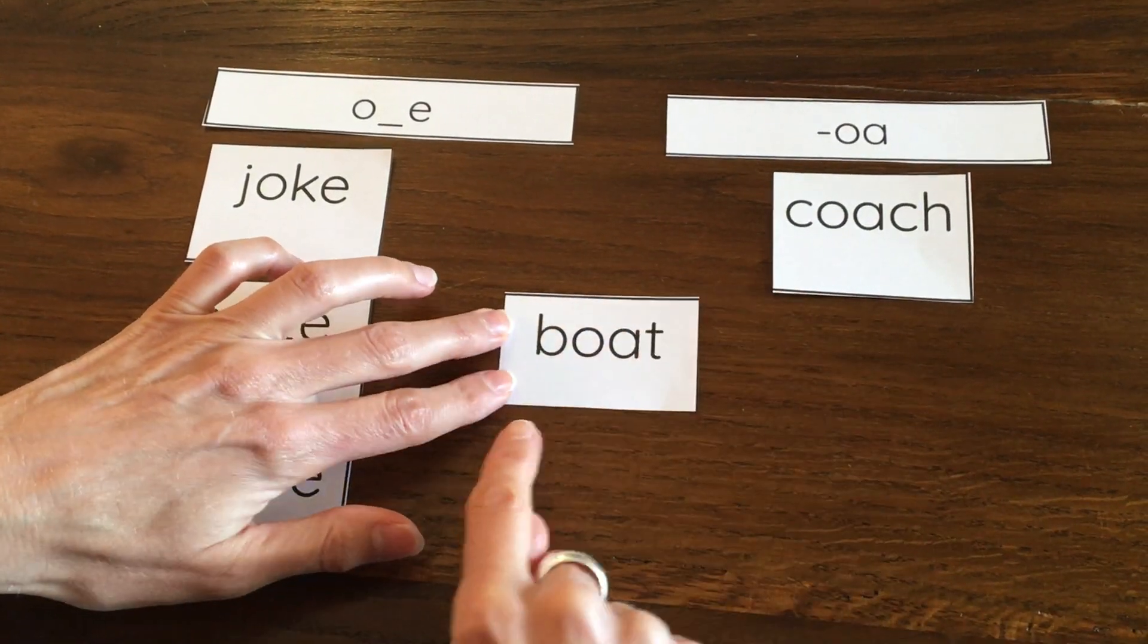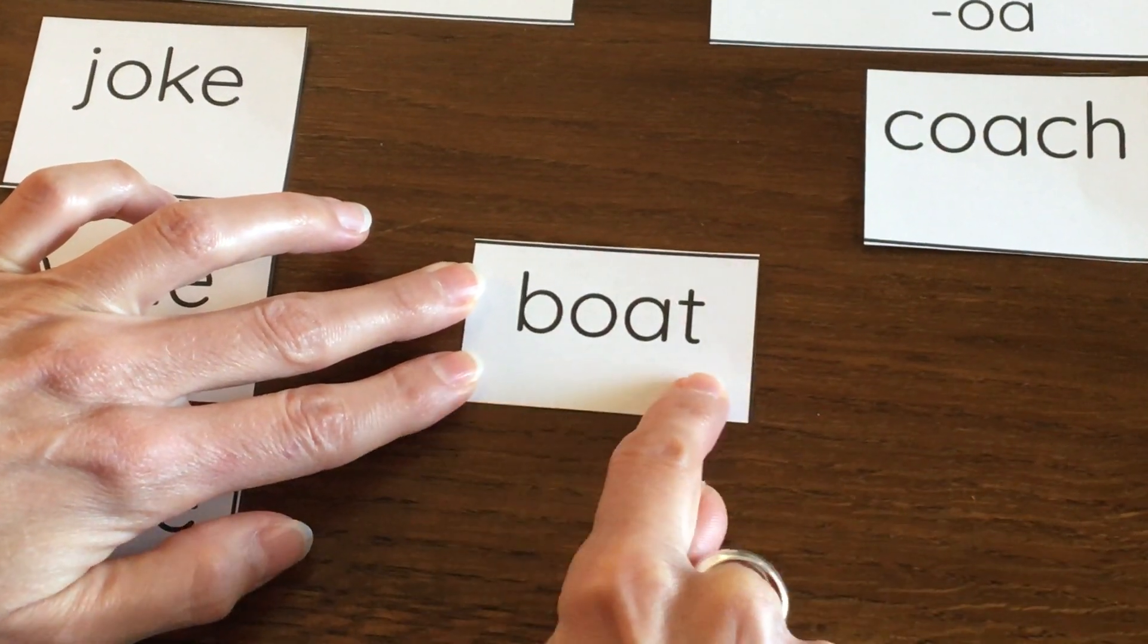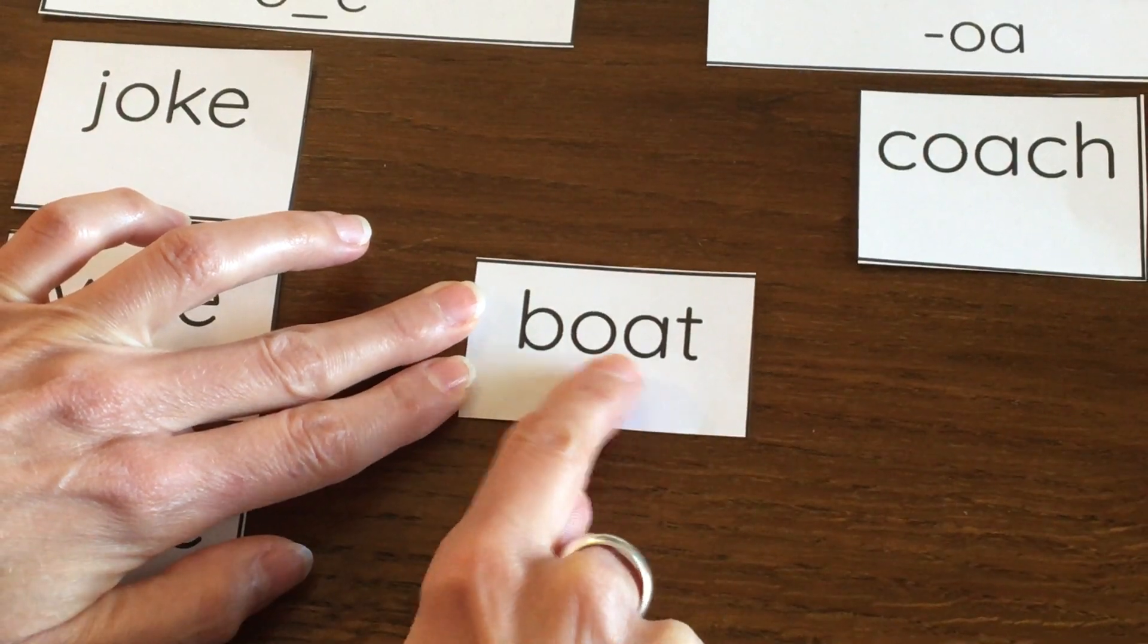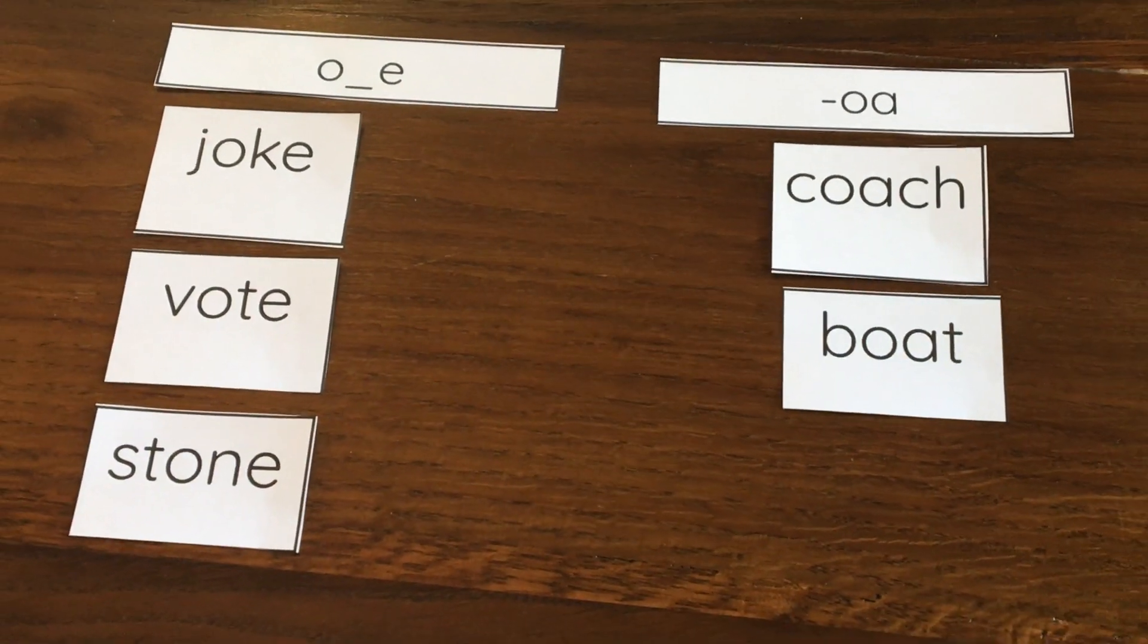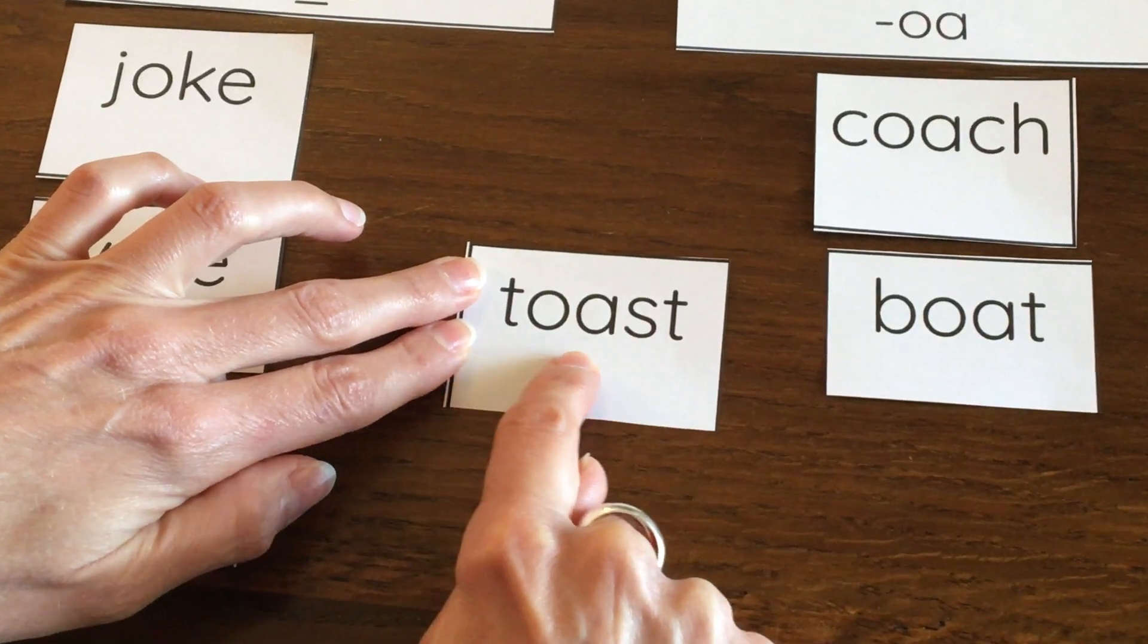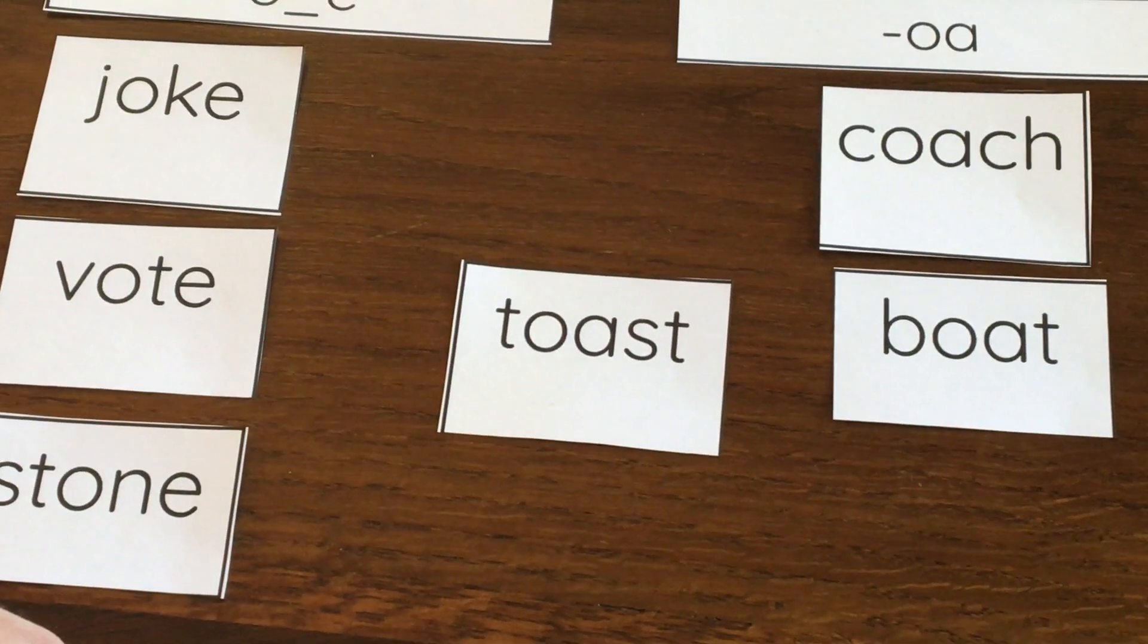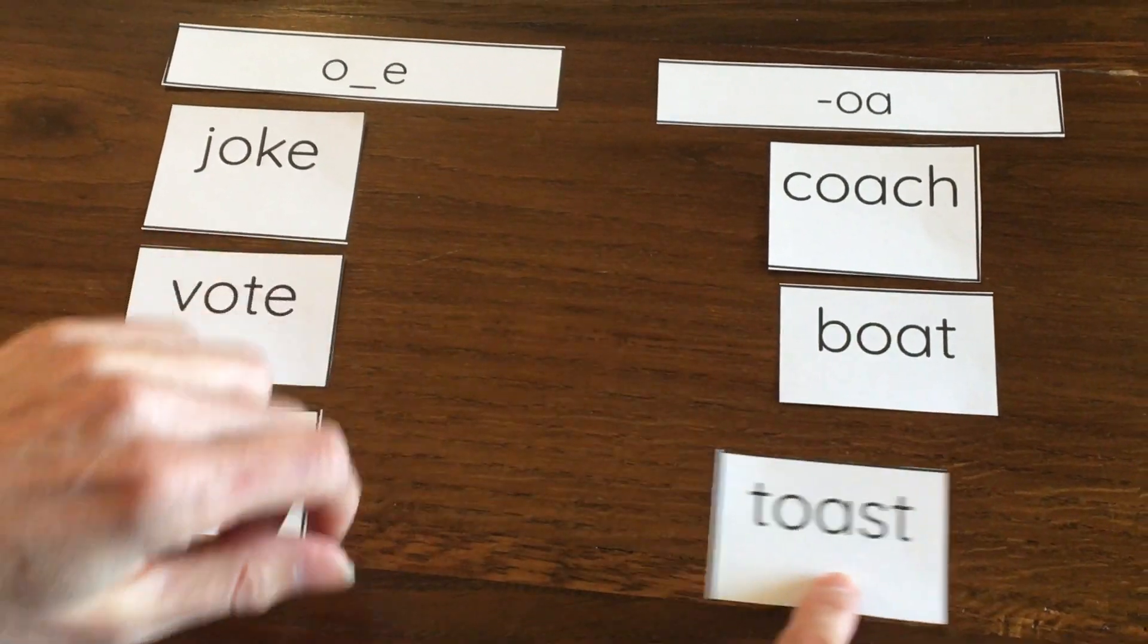Help me read. Boat. We go in a boat on the water. And there's that O-A making the O sound. Help me read. Toast. Toast is something we might eat for breakfast. It's bread that has been toasted. There's the O sound.